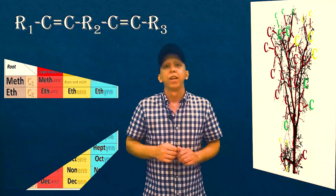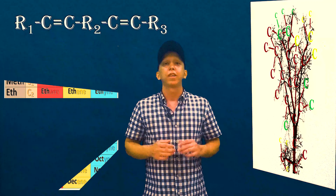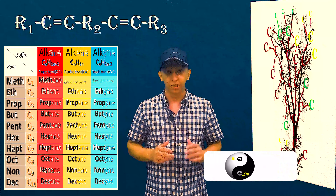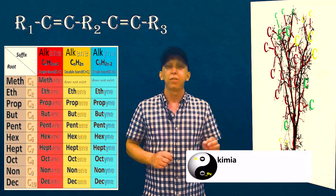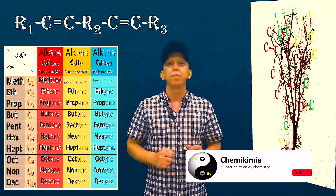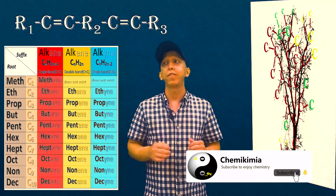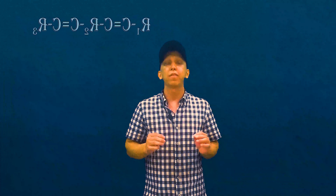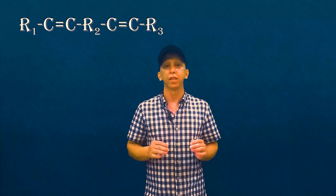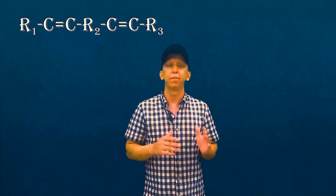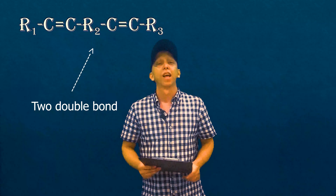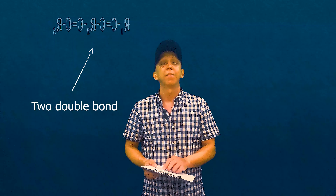Hi everyone. In our last video we talked about how to name alkene and alkyne structures. The question might arise for some of you: if we have a structure that has more than one double bond or triple bond, what should we do and how could we name it?